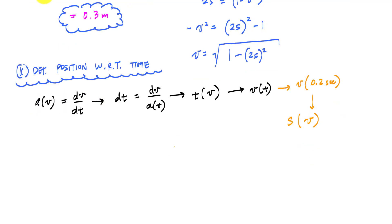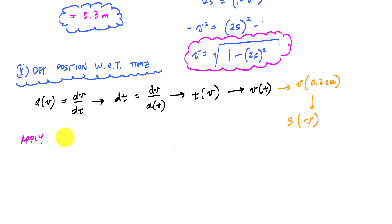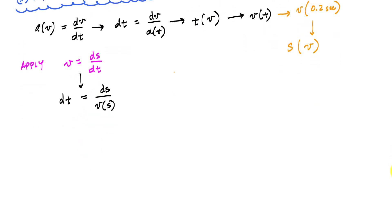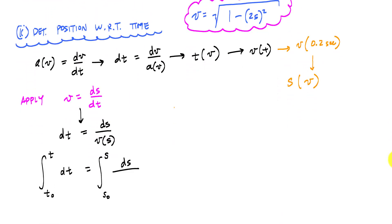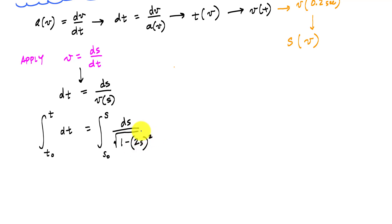The approach I'll use is to take the position-velocity relationship I already have and apply the definition of velocity: v equals ds/dt. Because I have velocity as a function of position, I group all the position variables together: dt equals ds over v(s). The integral will be the integral of ds over the square root of 1 minus 2s squared.